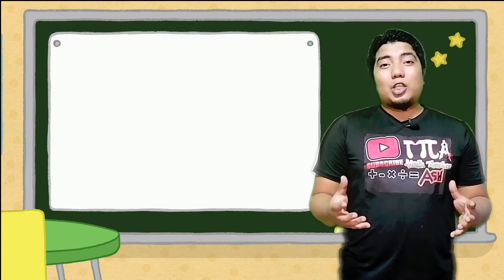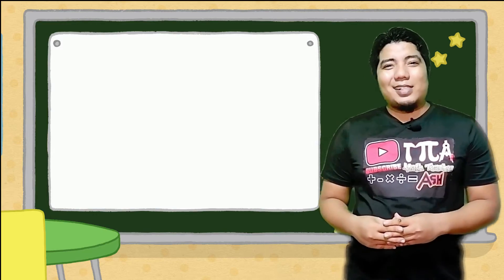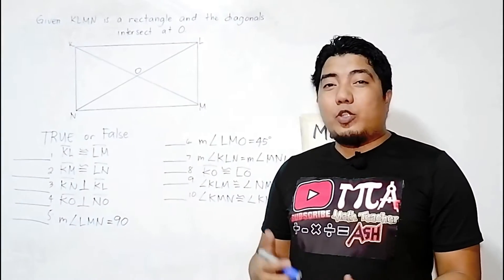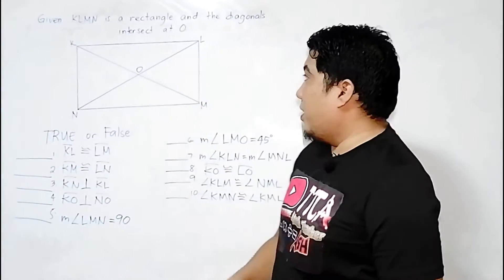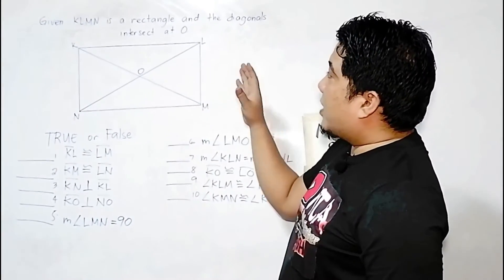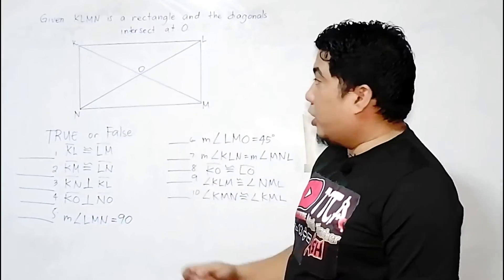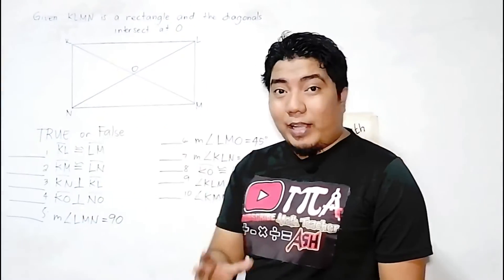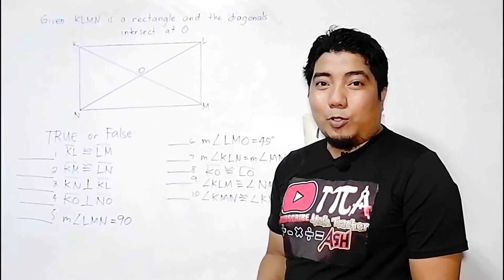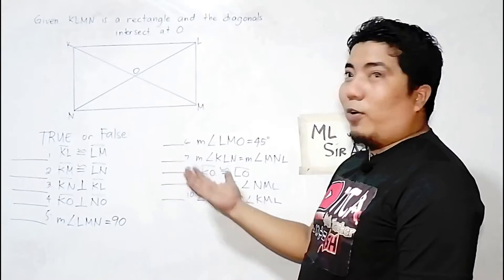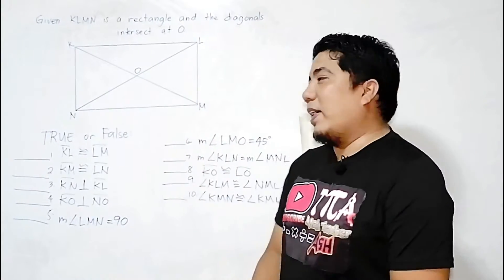Now let us go to our discussion board to go deeper in understanding rectangles. We have the following given: KLMN is a rectangle and the diagonals intersect at O. We will evaluate a series of true or false statements about this figure.